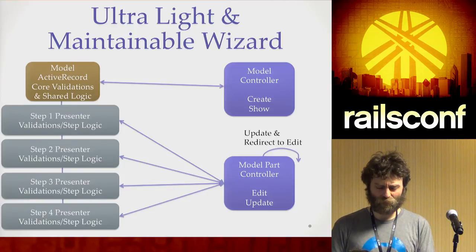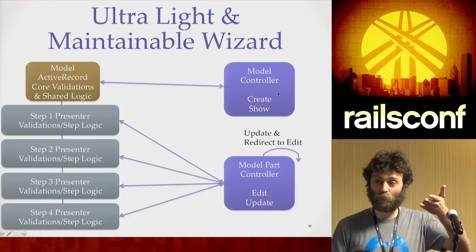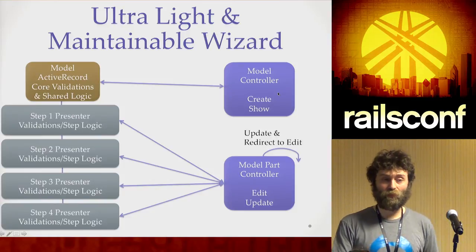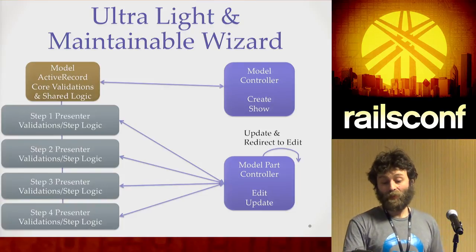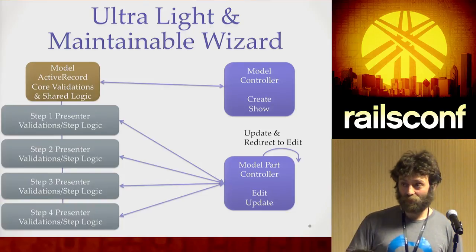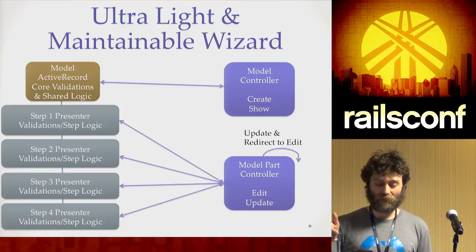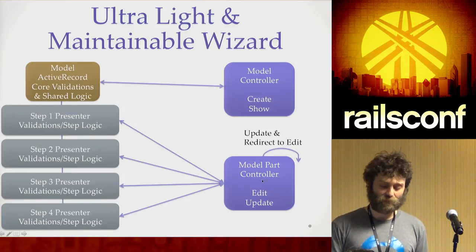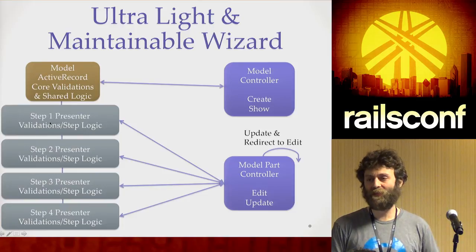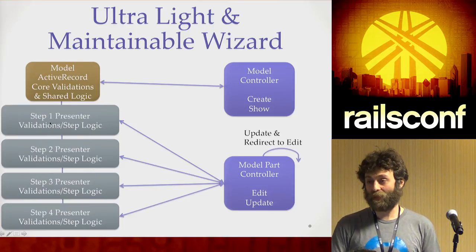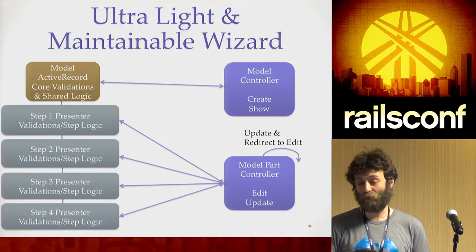The controllers — there are two of them. There's the one that manages the main model creation, so the first step of a wizard, when you create it, you use the main model controller. If I have a projects controller, I'll have a create action, and that triggers the wizard. It'll create it and then redirects me to the first step — the edit page of the nested model part, with ID 'basic info'. You use the step names as the IDs of that RESTful resource, which is perfect REST.